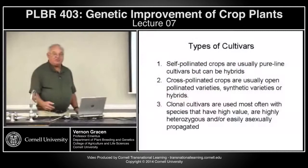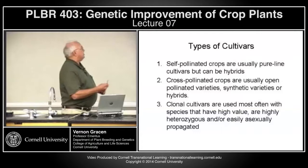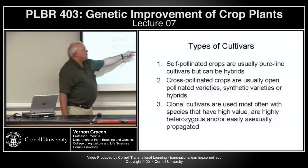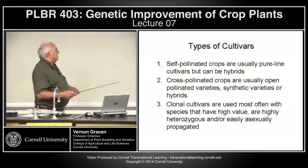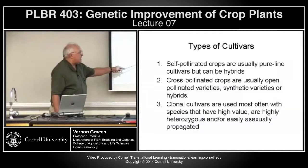The types of cultivars we deal with in self-pollinated crops are usually pure-line cultivars, but more and more frequently today they are F1 hybrids. Cross-pollinated crops usually have open-pollinated varieties, synthetic varieties, or hybrids. Clonal cultivars are used most often with species that have high value, are very heterozygous, and/or are easily asexually propagated.